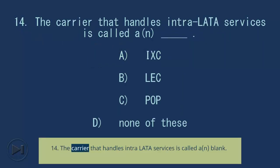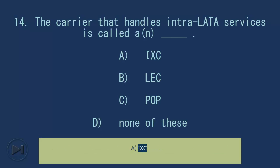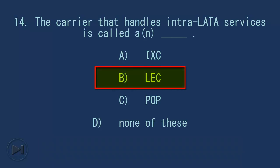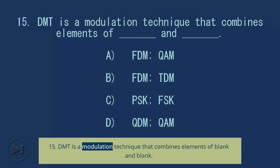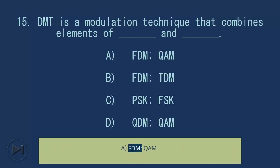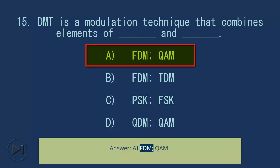Question 14: The carrier that handles intra-LATA services is called a/n blank. A. IXC. B. LEC. C. POP. D. None of these. Answer: B. LEC. Question 15: The modulation technique used in cable modem downstream is blank combined with blank. A. FDM/QAM. Answer: A. FDM/QAM.